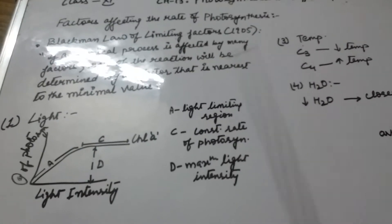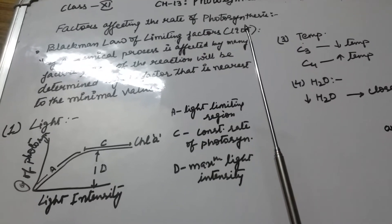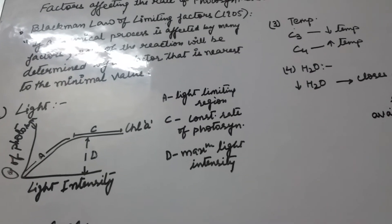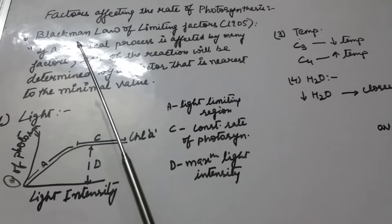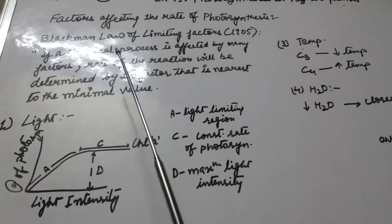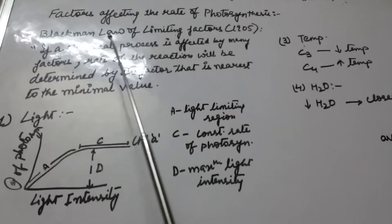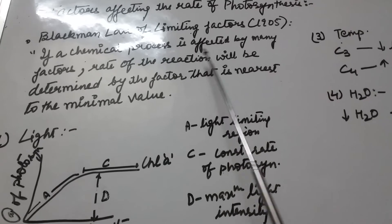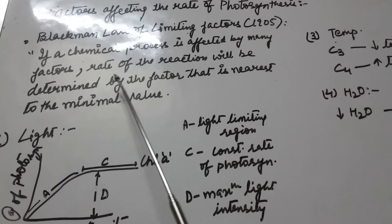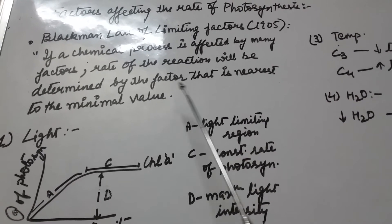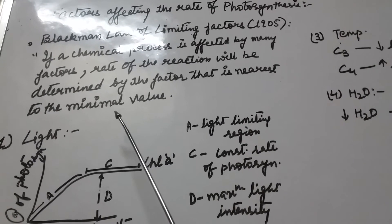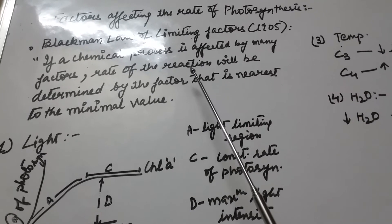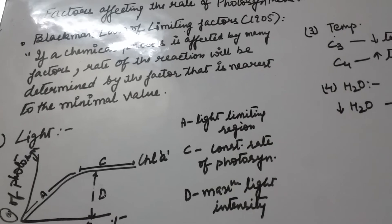The next topic is factors that affect the rate of photosynthesis. Before starting, let us understand Blackman's Law, given by Blackman in 1905, called the Law of Limiting Factors. According to this law, if a chemical process is affected by many factors, the rate of reaction will be determined by the factor that is nearest to its minimum value — that is, the factor with the minimum value determines the rate of reaction.